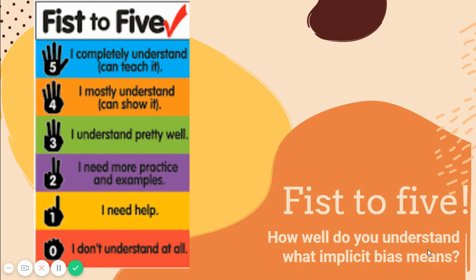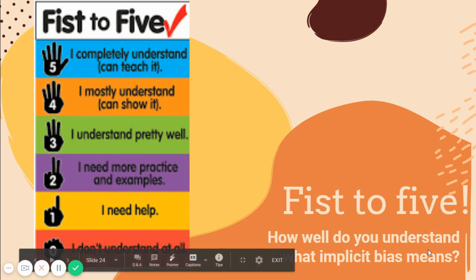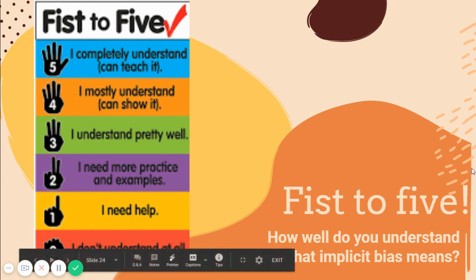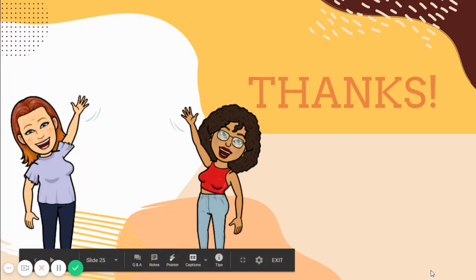So now, I want you to think. On a scale of zero to five, how well do you understand what implicit bias means? A zero means I don't understand it at all, and a five means I completely understand it and could teach it to someone else. Thank you.